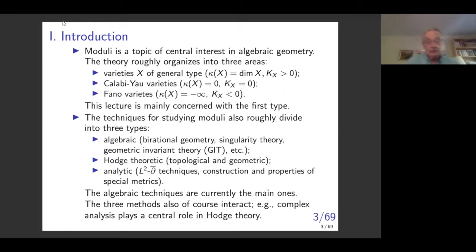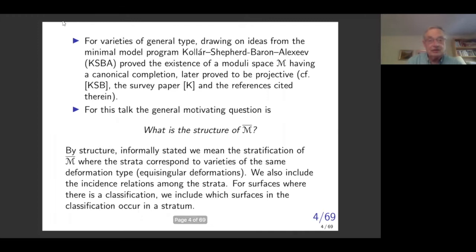Today I'll be mainly concerned with the first type. The techniques for studying moduli roughly divide into at least three types: the algebraic ones — birational geometry, singularity theory, GIT, and so on — which are the main tools used. To supplement the algebraic methods, one uses Hodge theoretic ones — that's what I'll be talking about today — both the topological aspects of Hodge theory and the geometric. And also analytic: L², D-bar techniques, construction and properties of special metrics. These interact, and today I'm focusing on the second one: how it can be used to get some understanding of moduli.